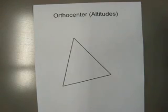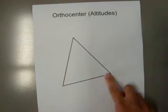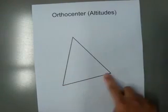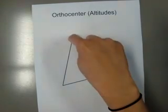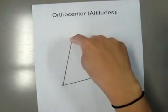An altitude is a line perpendicular to the base through the opposite vertex. So, using this as my base, I'm going to find the line that is perpendicular through that from the opposite vertex, which is this point.